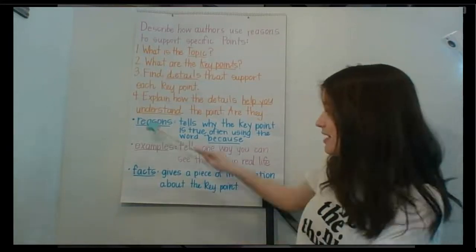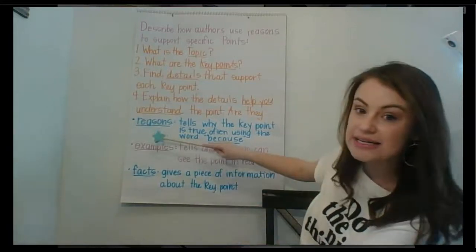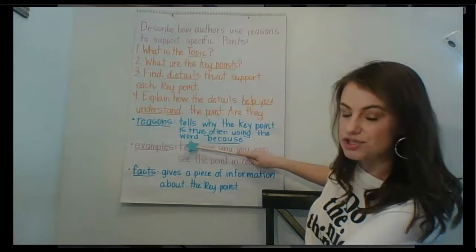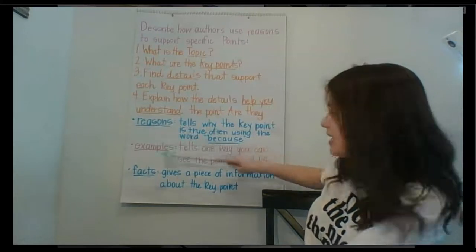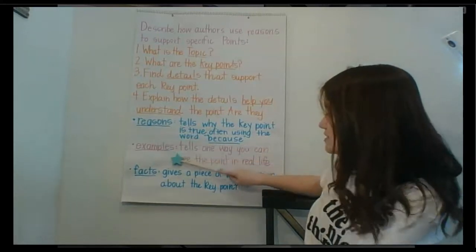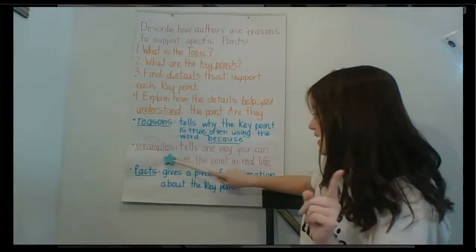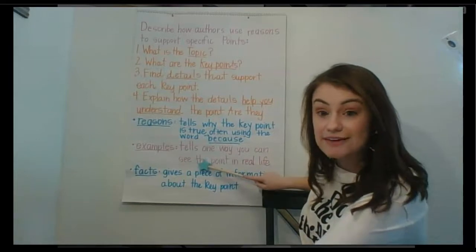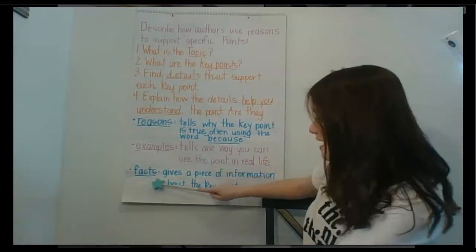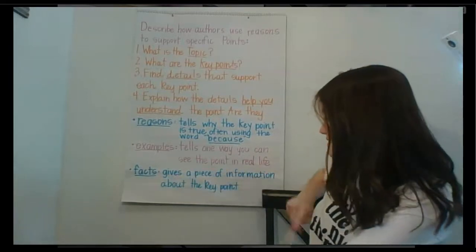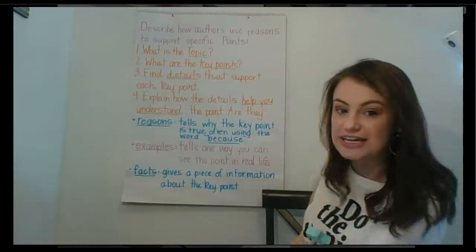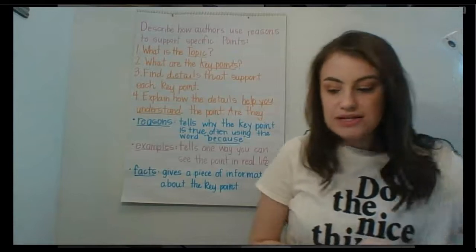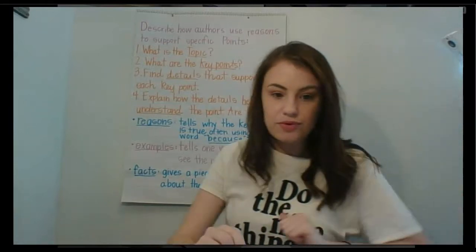A reason tells why the key point is true. An example tells one way you can see the point in real life. A fact gives a piece of information about the key point. So I'm going to go ahead and model this for you now so you know exactly what to do on Wednesday.